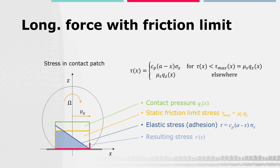In the second area, the local stress is limited by the static friction limit. The stress tau_max due to the static friction limit is proportional to mu_s and the contact pressure distribution qz of x. For now, we assume the pressure distribution to be constant in the contact patch, shown by the green curve. Thus, tau_max shown in the orange curve is also constant in the x-direction of the contact patch.